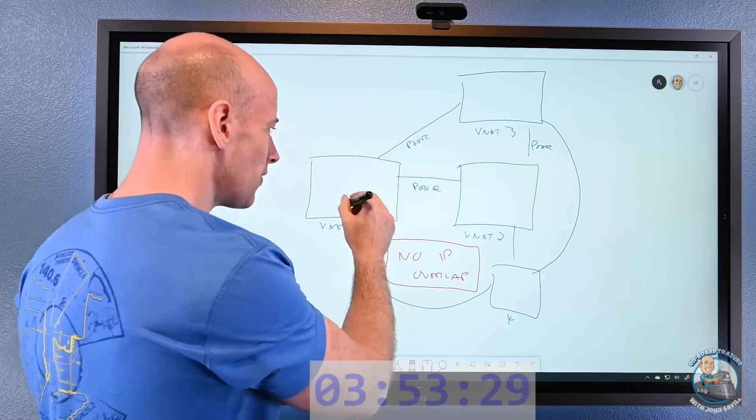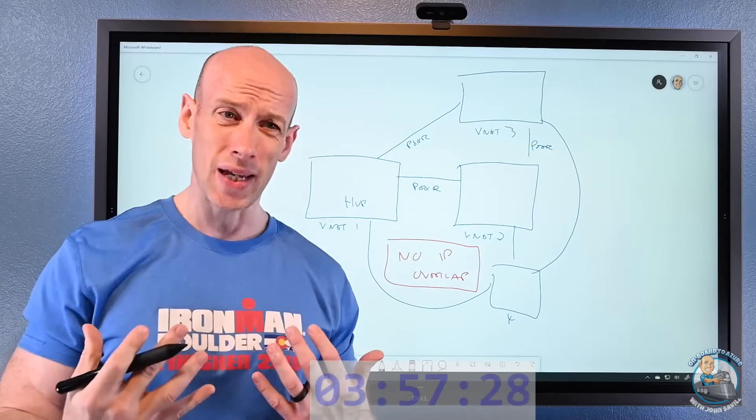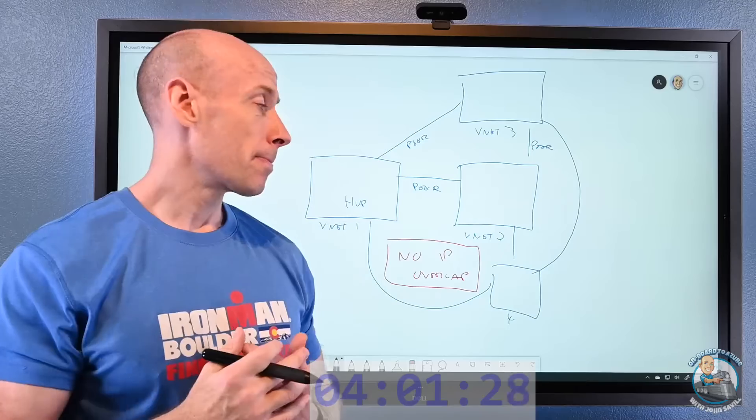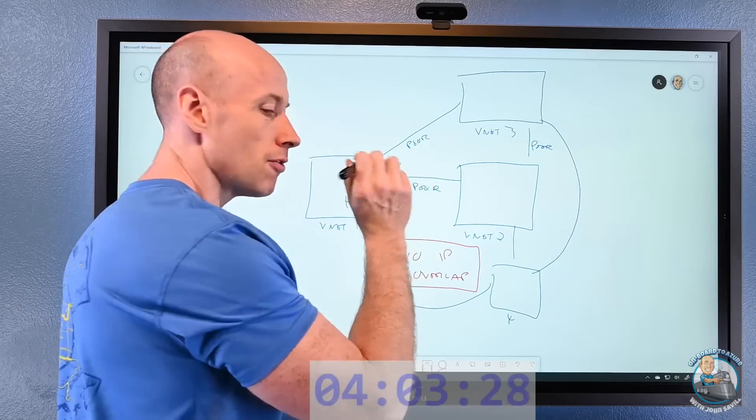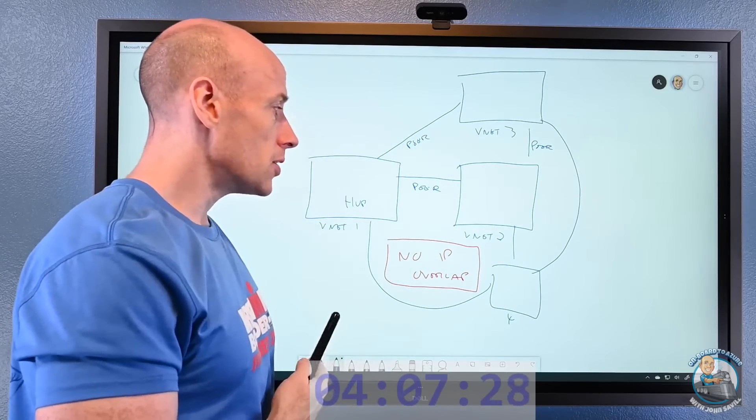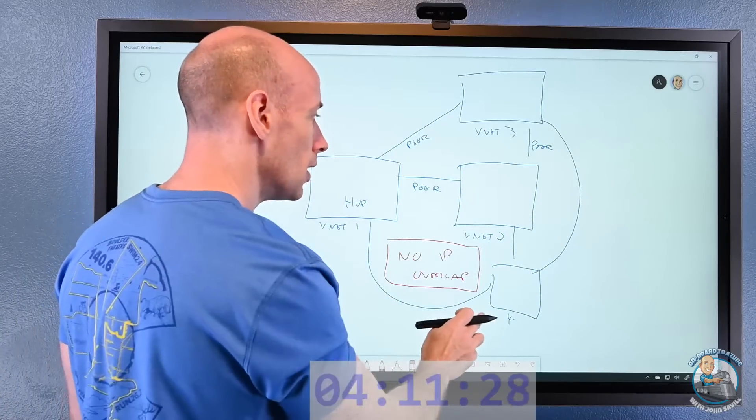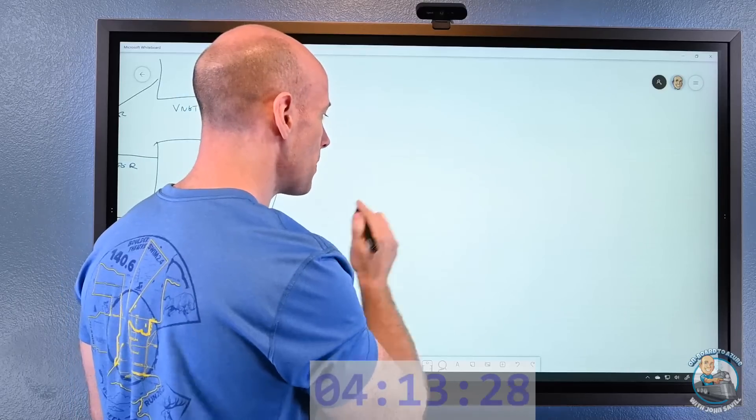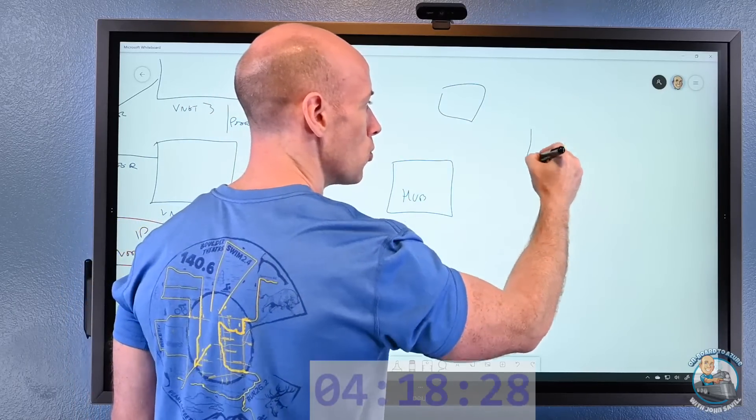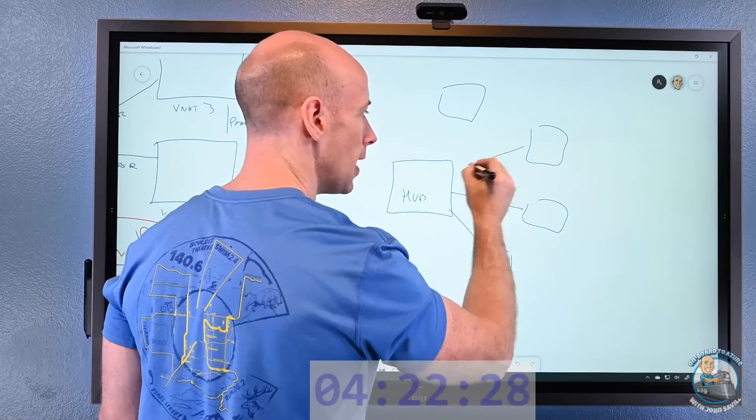There are things I can do. So another option: if I think about that hub scenario and then I have multiple spoke virtual networks, and I just peer all of them to the hub—these are all just peering connections.